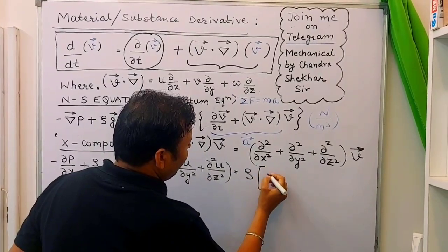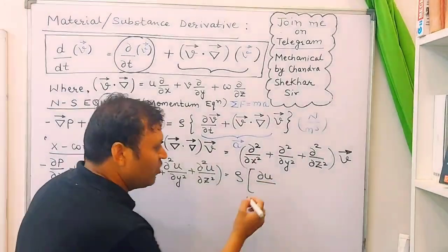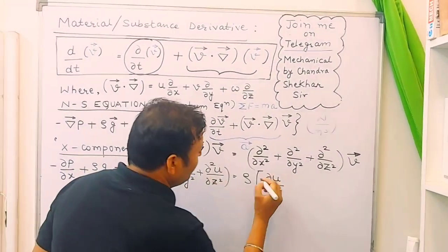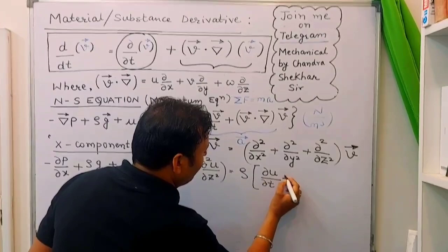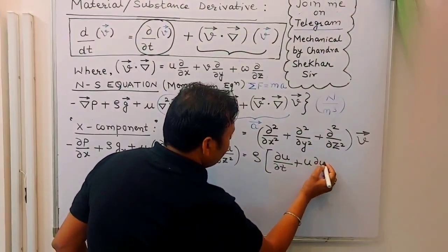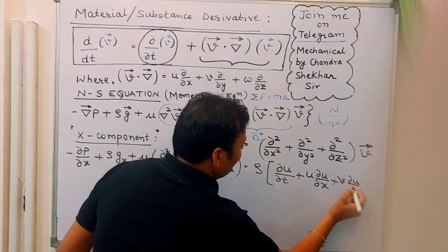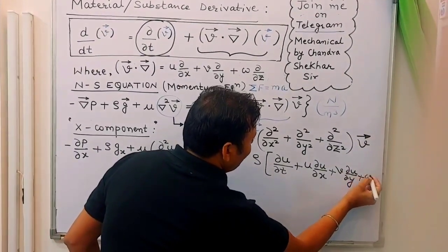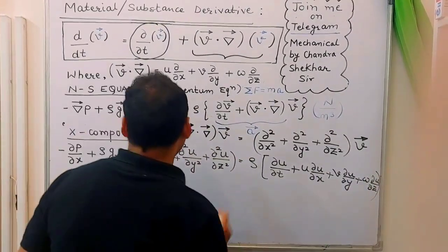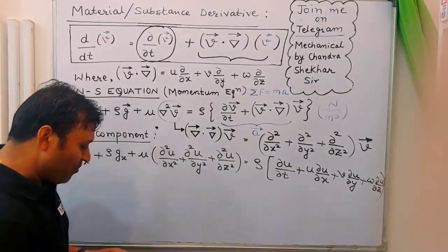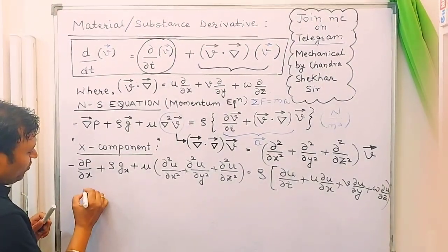How do we write a-x? We have already discussed this in the previous video — you can watch it again if needed. It is: del-u by del-t (the local term) plus u into del-u by del-x plus v into del-u by del-y plus w into del-u by del-z. This is how the x-component of the Navier-Stokes equation can be written.